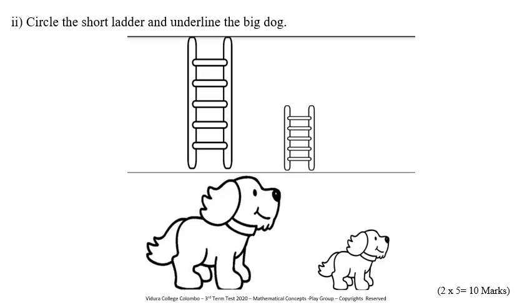This is the second part of the second picture. We'll have to circle the short letter and underline the big dog. First, circle the short letter. Now, underline the big dog.